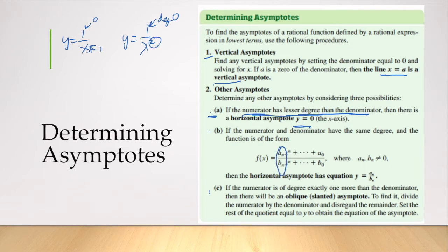For example, if I have y equals 3x squared plus 1 over 2x squared plus 4x plus 1, it would have a horizontal asymptote at y equals 3 halves, because those are the leading coefficients, and the numerator and denominator have the same degree.